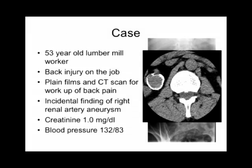This is a 53-year-old man referred from a rural area. He's a lumber mill worker who had a back injury on the job with some pain, which resulted in an imaging study being performed. On imaging, you can see in the right upper quadrant what appears to be the world's biggest gallstone. Plain films and CT scan were obtained, and what was actually found was a calcified renal artery aneurysm. He had normal renal function — serum creatinine of 1 mg/dL — and blood pressure was in the normal range at 132 over 83.